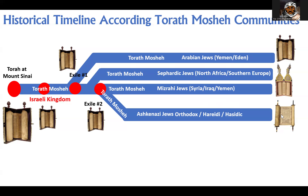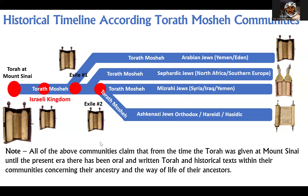I've talked about the very minor differences between these communities, which you would expect more differences based on somebody being in Europe versus someone being in Yemen who had no contact with each other. And that's why it's important that all of the above communities — from the time the Torah was given at Mount Sinai until the present era — all claim that there's been both an oral and written Torah, and a historical text within the communities concerning the ancestors and the way of life of their ancestors.